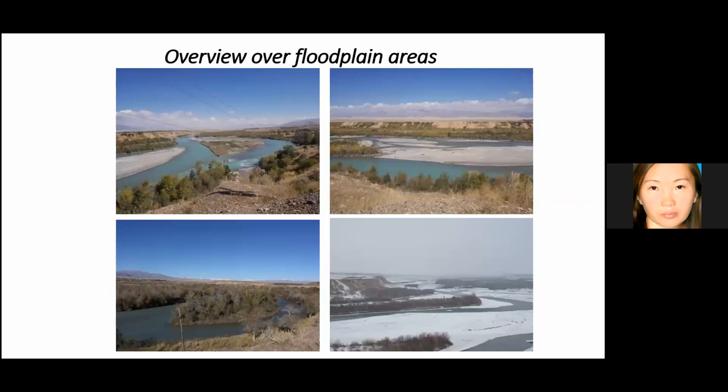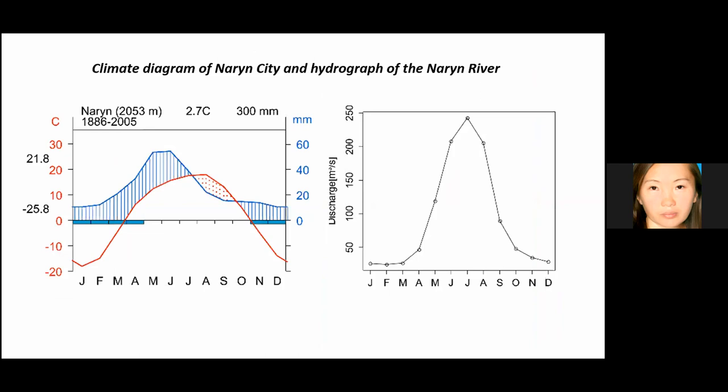Floodplain vegetation species include poplar, yellow willow, and shrubs such as honey sap, sea buckthorn, spirea, tamarix, rosa, and oleaster. An overview of the floodplain areas can be seen in several seasons. The climate of the Narin River watershed is characterized by a continental climate with cold and long winters and short summers. According to the Narin meteorological station, the average annual temperature from 1886 to 2005 is about 2.7 degrees Celsius; the coldest month is January and the warmest is July.